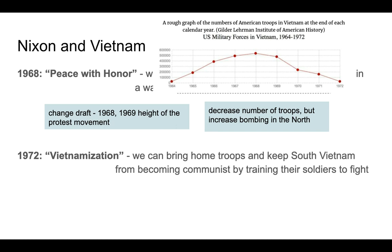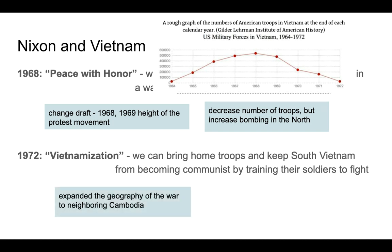In 1972, we're still involved in the war and the strategy changes to what's called Vietnamization. Nixon says vote for me — I've got a new plan. We're going to hand over the fighting to the South Vietnamese. The argument at that point is about training the people of South Vietnam to defend themselves against communism. Looking at the graphic, you can see we're really decreasing the number of troops and therefore the protest against the draft has also decreased.